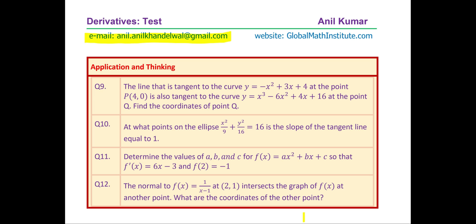Question number nine here is: the line that is tangent to the curve y equals minus x square plus 3x plus 4 at the point P(4, 0) is also tangent to the curve y equals x cube minus 6x square plus 4x plus 16 at the point Q. Find the coordinates of point Q. Interesting question. We have seen this in past test papers. You might also get a similar question.